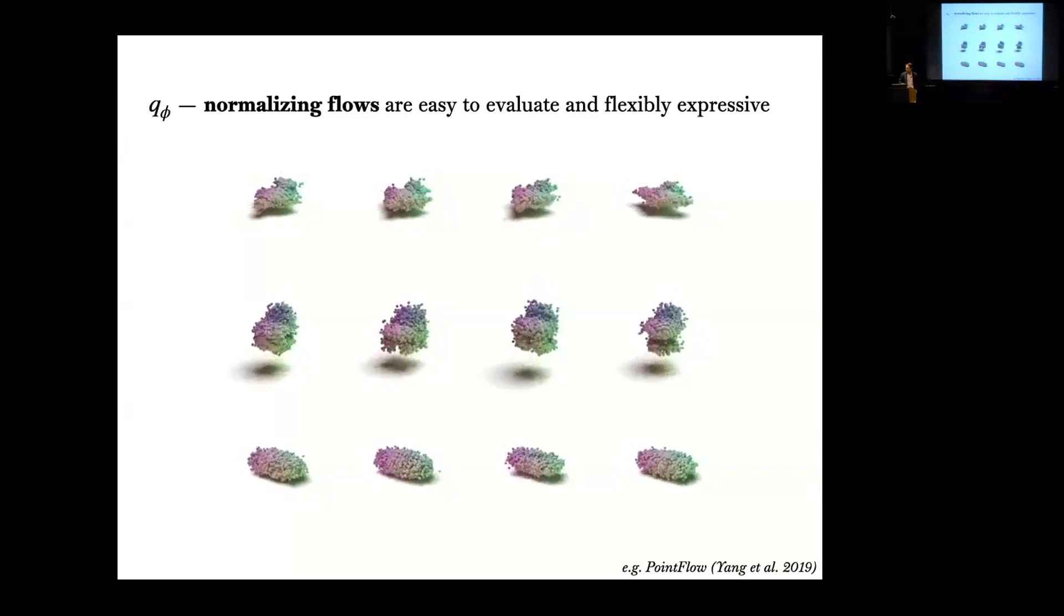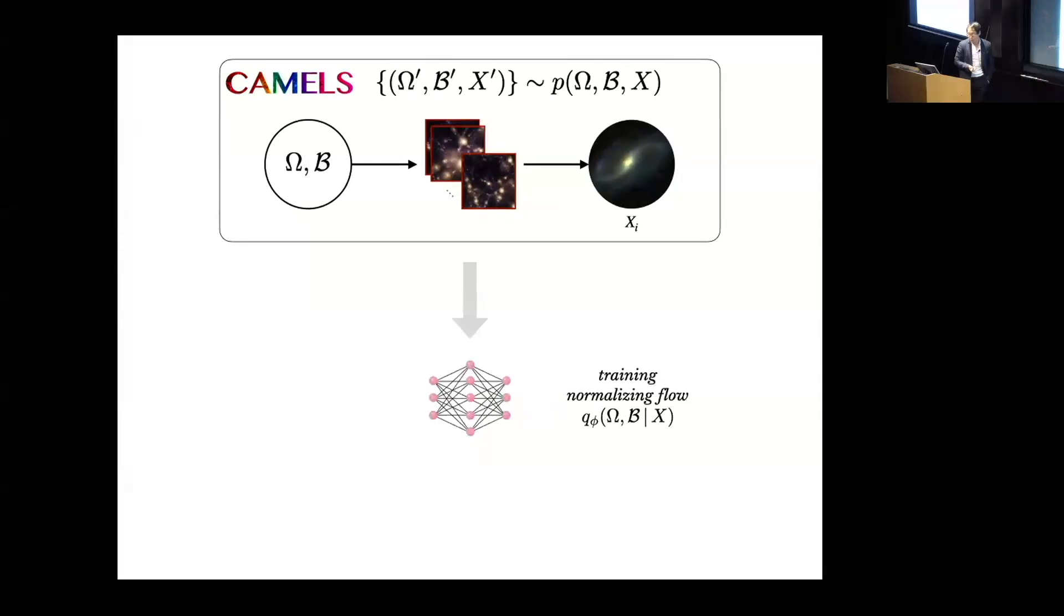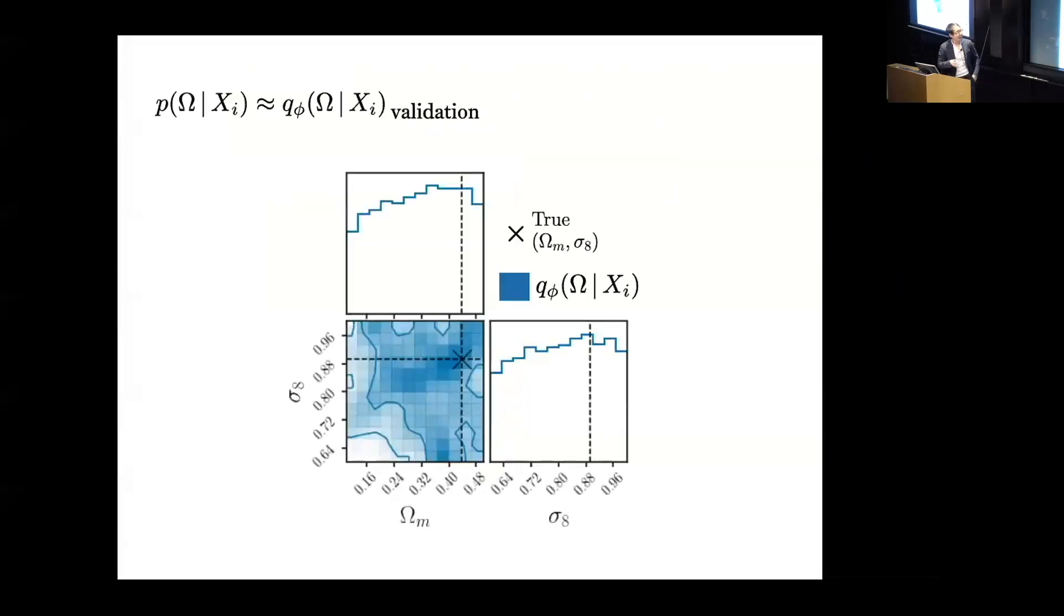Let's go back to the setup I was describing earlier. We have the CAMELS forward model, so we have a way of going from the input parameters including the cosmological parameters to the hydrodynamical simulations and then to the simulated forward model photometry of galaxies. We can use that data then to train a normalizing flow to estimate the posterior. Once we have the trained normalizing flow, we validate it to make sure that it's actually able to derive or infer the posteriors correctly.